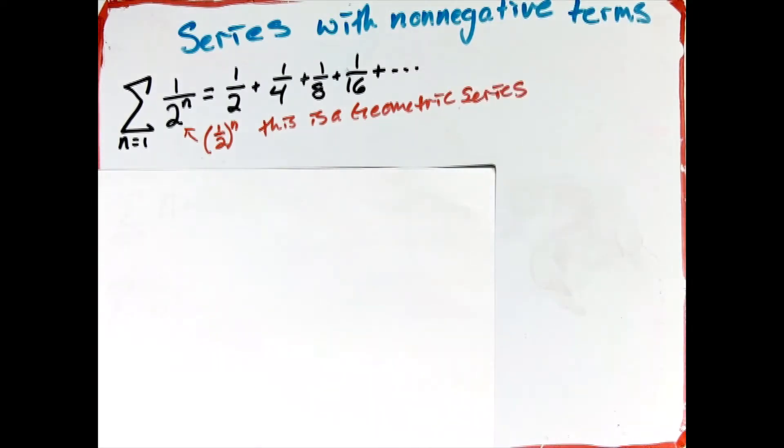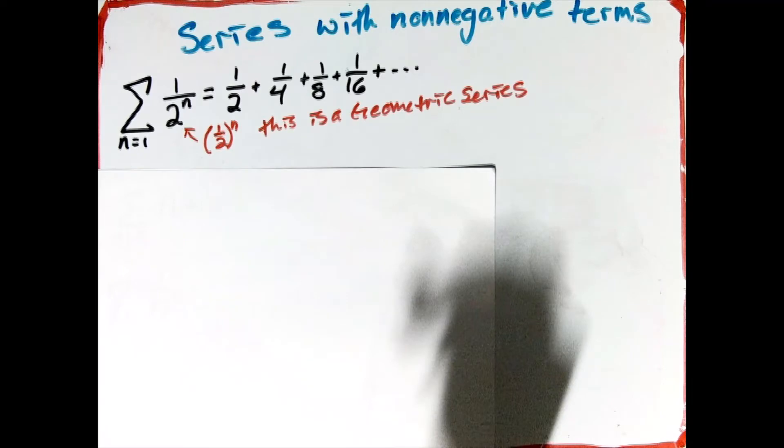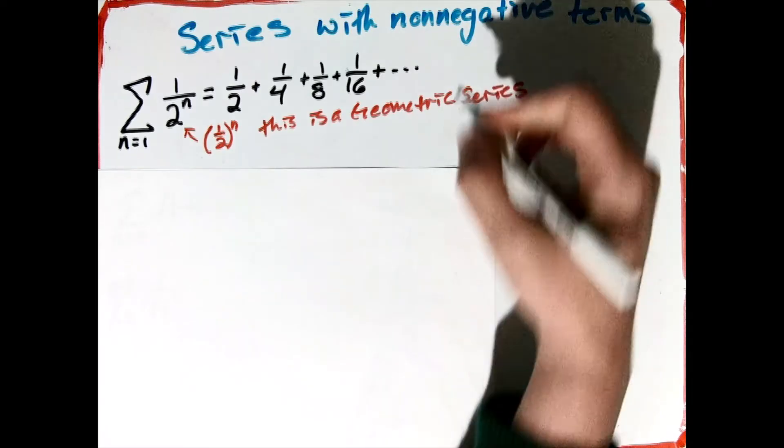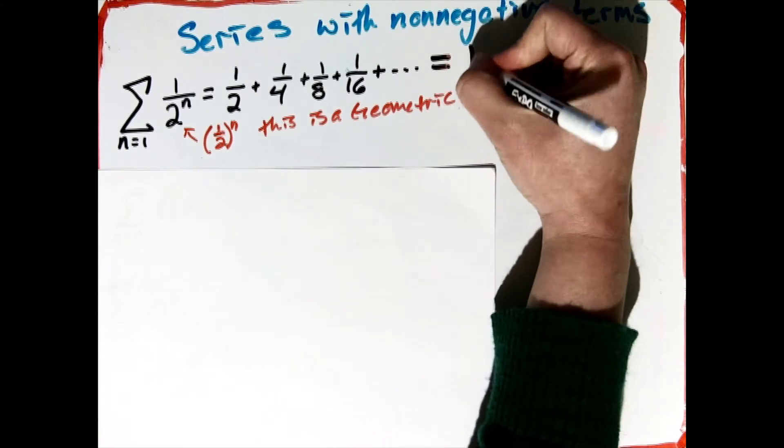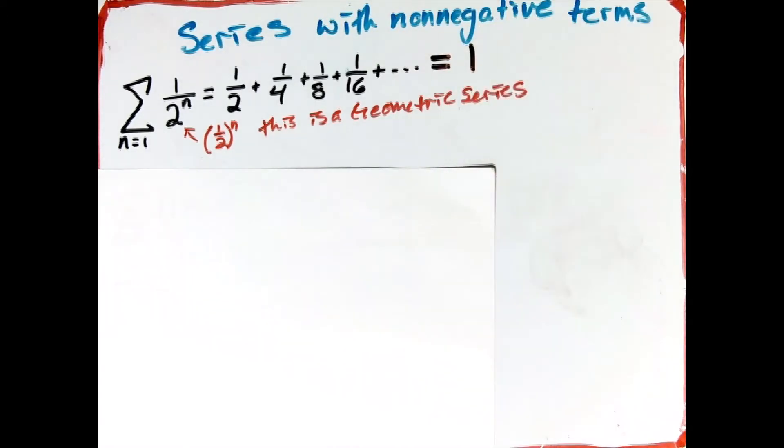And we know that geometric series converge when the thing being raised to the nth power is less than 1. So here we have a half and that's less than 1, and so we actually know the sum here. If we do some fancy footwork, the sum here is actually 1.